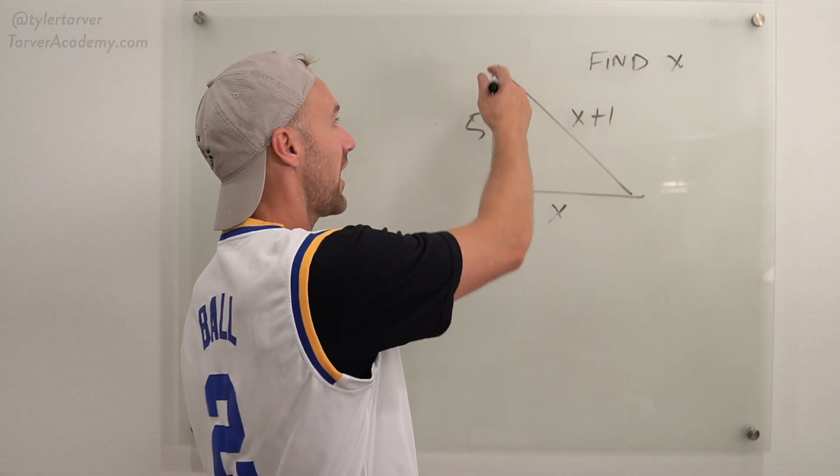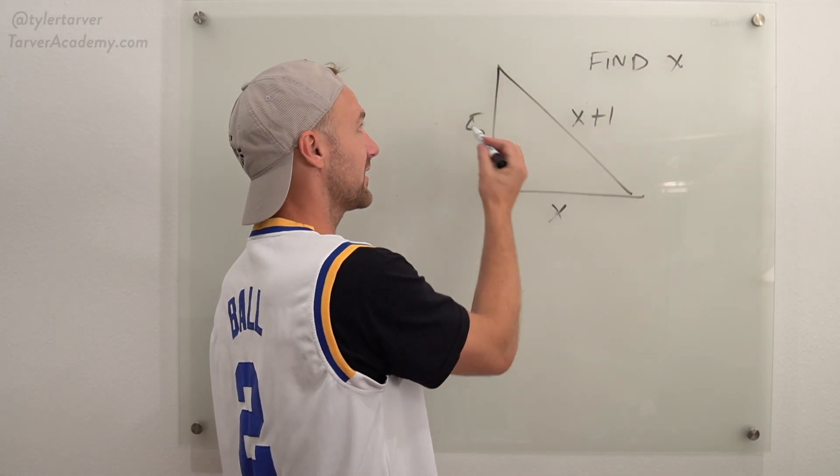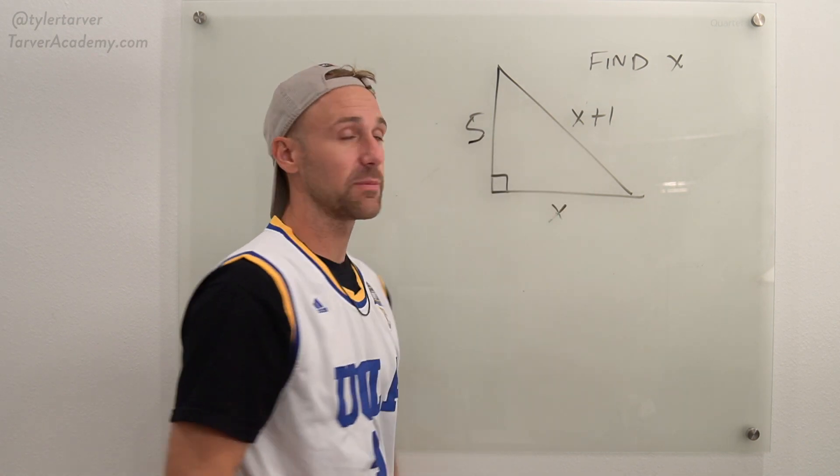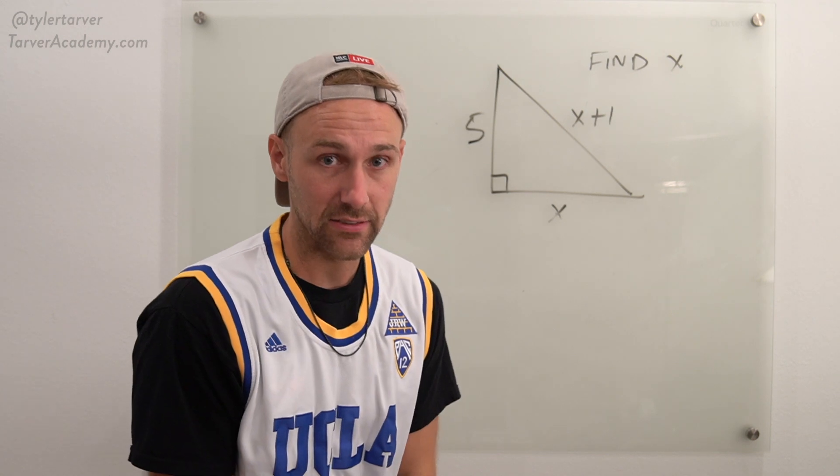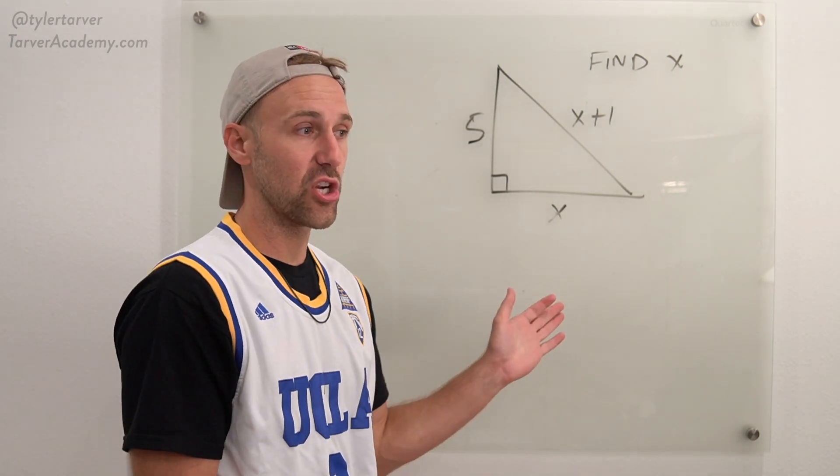Today's example problem, we've got a right triangle. We've got a side that is x, one that is 5, and one that is x plus 1. We want to find the measure of x. So give this a shot and then work it together.